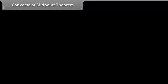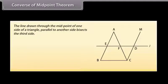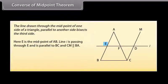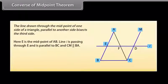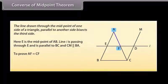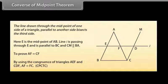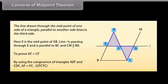Converse of midpoint theorem: The line drawn through the midpoint of one side of a triangle, parallel to another side, bisects the third side. Here E is the midpoint of AB; line L passes through E and is parallel to BC, and CM is parallel to BA. We have to prove AF = CF. By using the congruence of triangles AEF and CDF, we can prove that AF = FC.